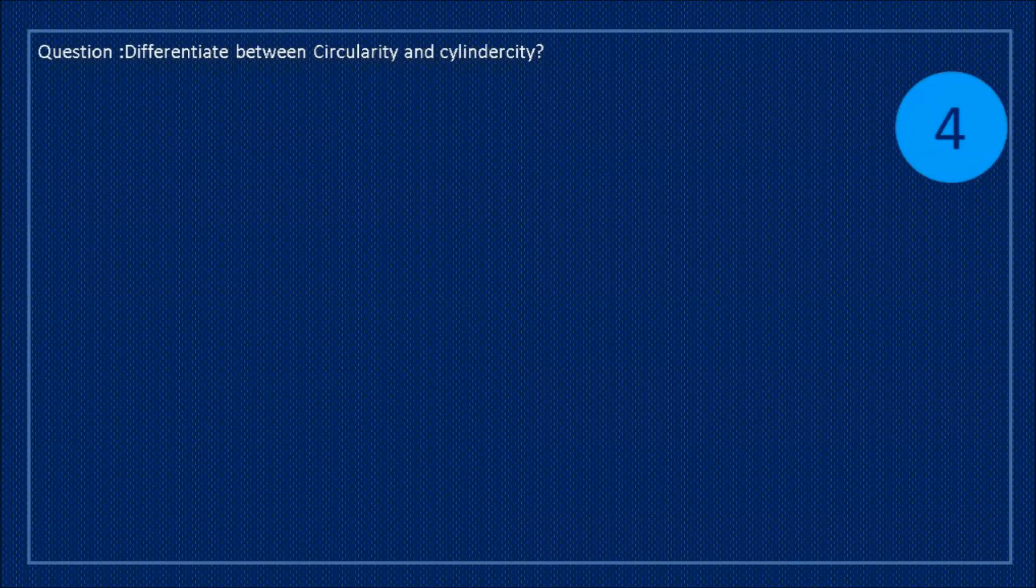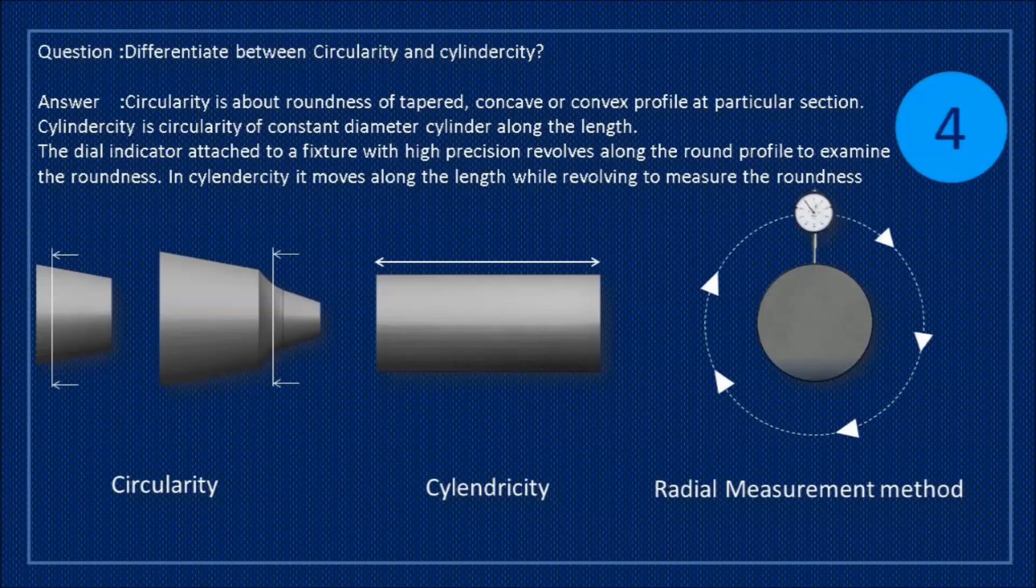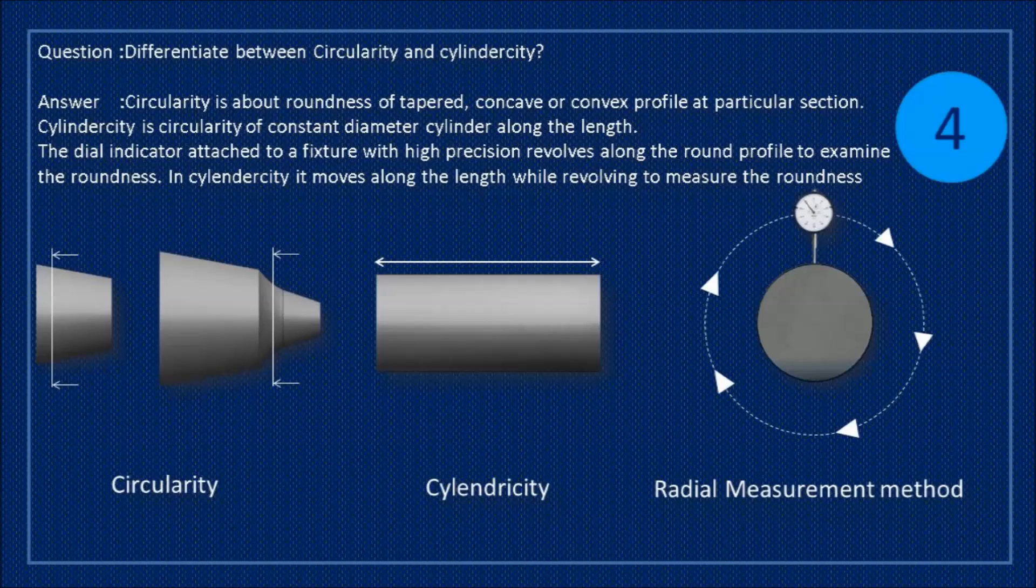Question: differentiate between circularity and cylindricity. Answer: circularity is about roundness of tapered, concave or convex profile at particular section. Cylindricity is circularity of constant diameter cylinder along the length.